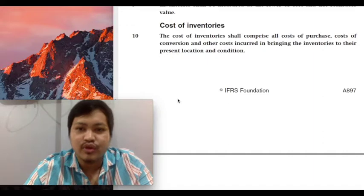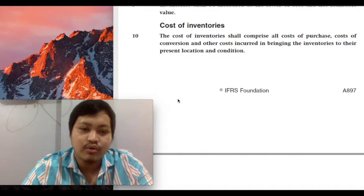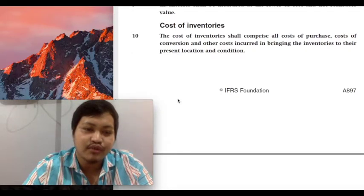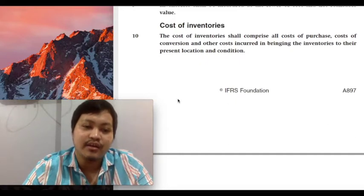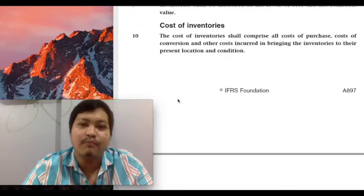With regard to costs incurred in bringing the inventories to their present location and condition, just think of this as all necessary costs to bring the inventory to its present location and condition. You will just have to keep on asking yourself: is this cost necessary to bring the asset to its present location and condition? If the answer is yes, include that in the cost of your inventories — even if that amount is not paid to the seller or to your supplier, it will still form part of your cost of inventories.